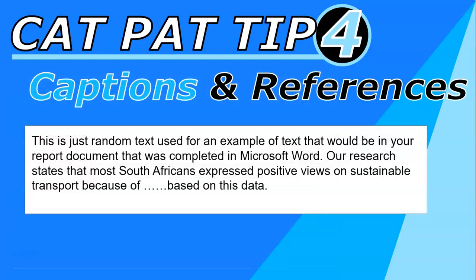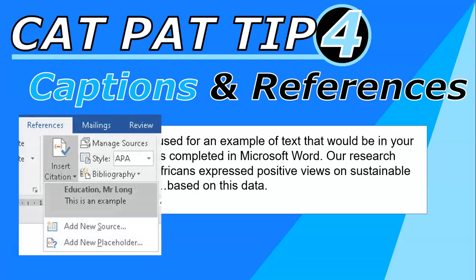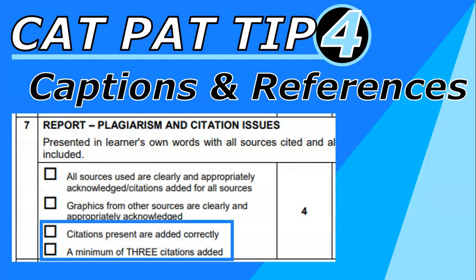When you go to your text, find the part that refers to that source, then go to References, Insert Citation, and click on the relevant source. At the end of your sentence, click it and it will add the citation to your document. Remember, you need at least three citations from different sources — make sure they're all added.